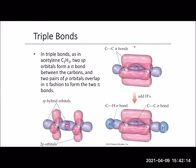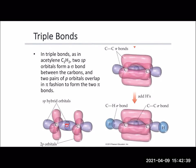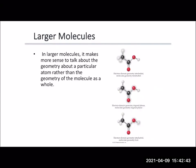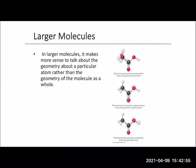When looking at different hybridizations, valence bond theory allows us to visualize how two atoms are connected and how the electron density looks between them, connecting them through sigma bonds and pi bonds. Sigma bonds are from hybridized orbitals; pi bonds are from unhybridized p orbitals. We can figure all of these out looking at larger molecules. When looking at geometry, it's easier to look at the geometry of each individual atom rather than the entire molecule.